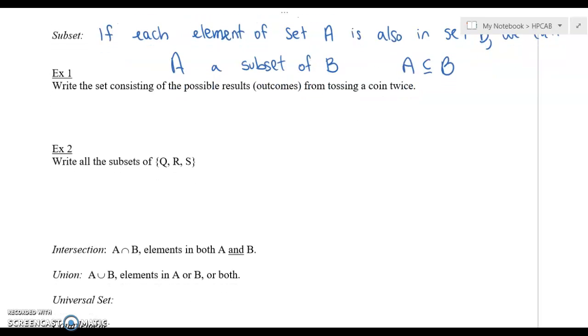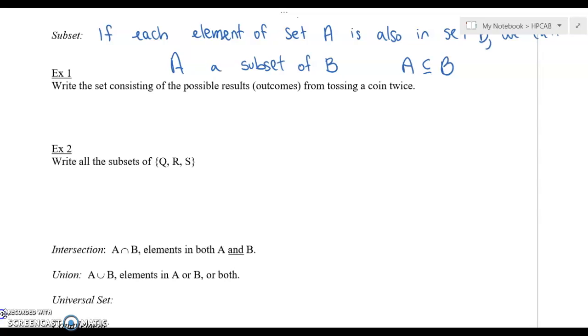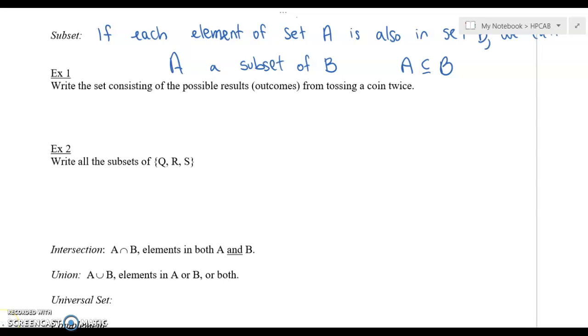So here we go. We've got write the set consisting of possible results, outcomes from tossing a coin twice. So anytime that you have a set, you're going to put in these fancy little brackets. And let's see, the possibilities are you could get two heads, you could get two tails, you could get a head and then a tail, or you could get a tail then a head. That's about the only set of possibilities that you've got as far as tossing a coin twice.